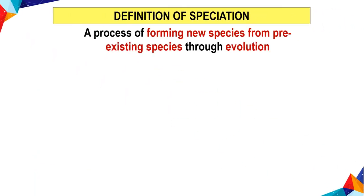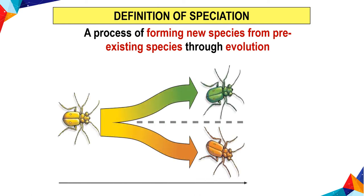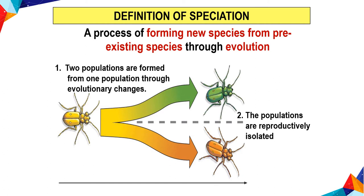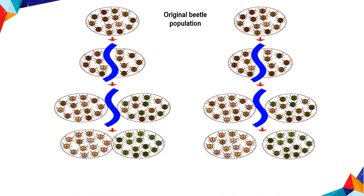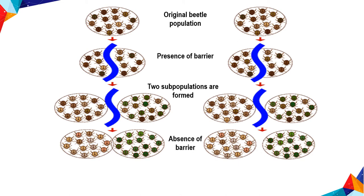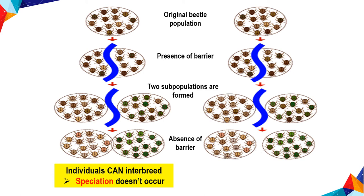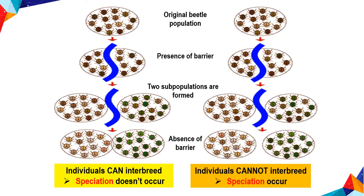Definition of speciation: speciation is a process of forming new species from pre-existing species through evolution. Two populations are formed from one population through evolutionary changes, and the populations become reproductively isolated. Starting from the original beta population, when a barrier is present, two sub-populations are formed. When the barrier is absent, if individuals can interbreed, speciation does not occur. If individuals cannot interbreed, speciation occurs.